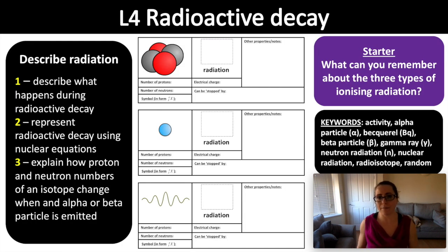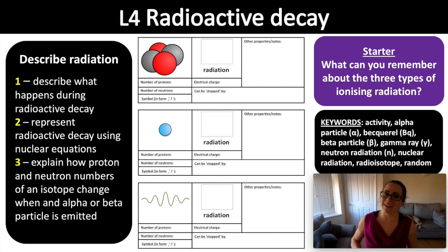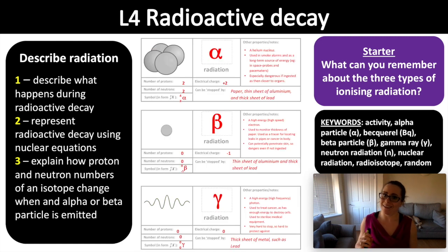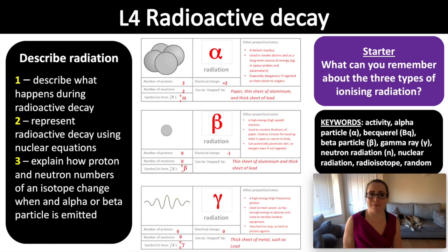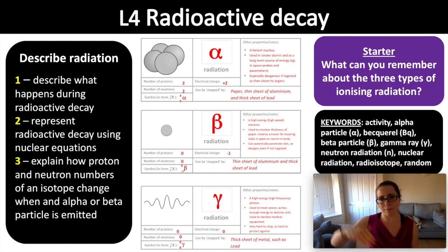Last time we were in the lab, we looked at the three types of ionizing radiation. There are two which are particles and one which is a wave. Can you remember their properties? Can you remember their names? Pause the video so you can fill in this grid and see what you can remember. Looking at the answers, we've got alpha, beta, and gamma. Alpha and beta are our two ionizing radiations which are particles. Gamma is a high energy wave.